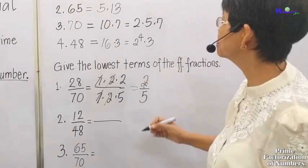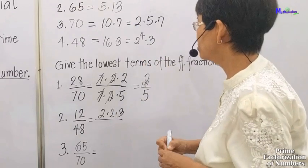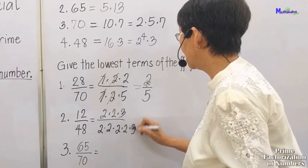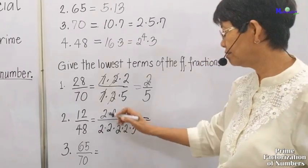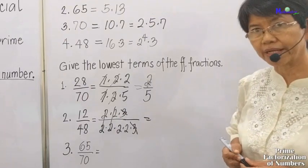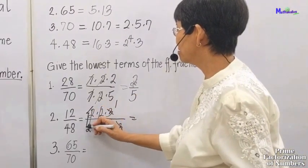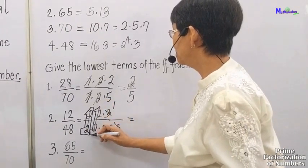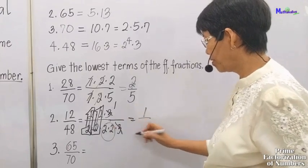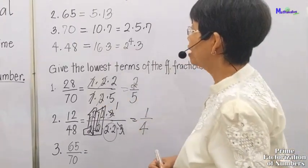Next, 12 is 2 times 2 times 3, and 48 is 2 times 2 times 2 times 2 times 3, so we can cancel very clearly. Since all the numbers in the numerator were cancelled, it's not a 0 — it's equivalent to 1, because all the numbers that were cancelled equal 1. So there is 1 in the numerator and 4 in the denominator, making the lowest term 1 over 4.